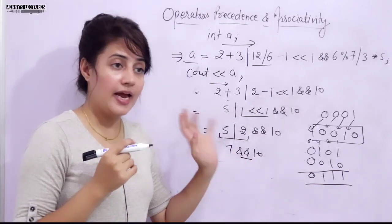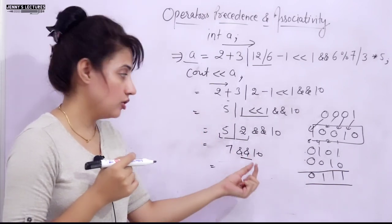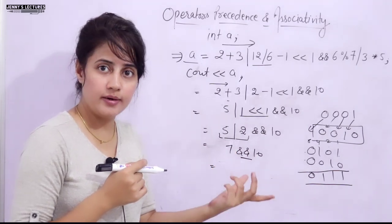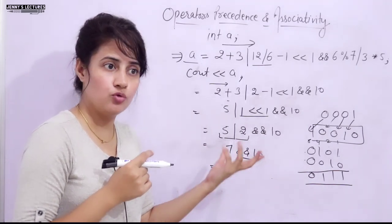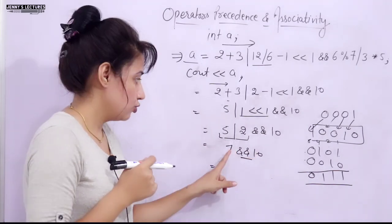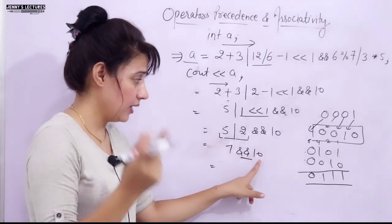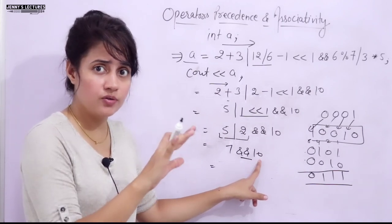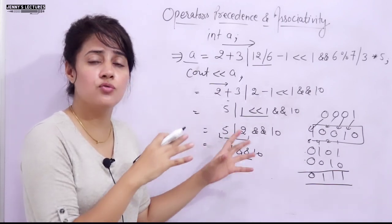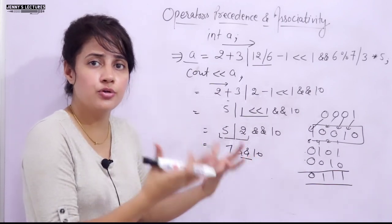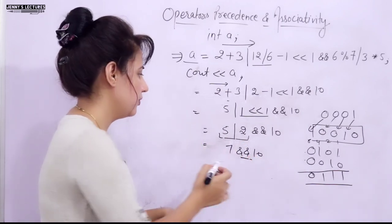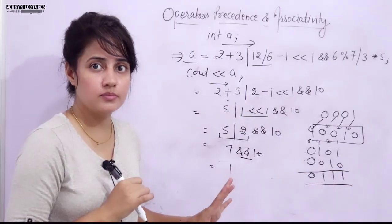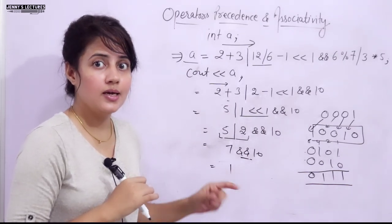For logical AND, operands are treated as Boolean values. Any non-zero value is true. So 7 is true and 10 is true. True AND true gives 1. Therefore y becomes 1.